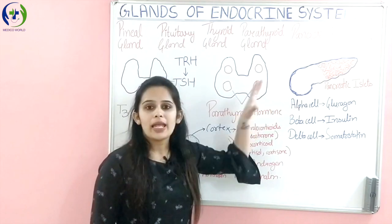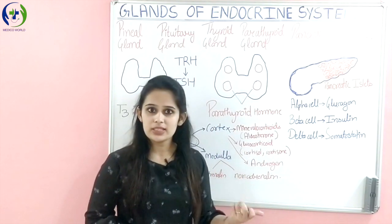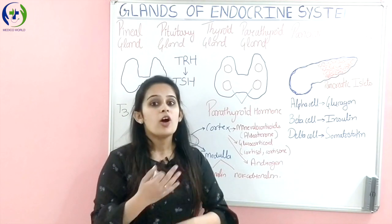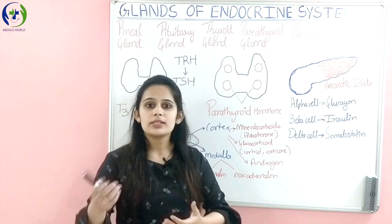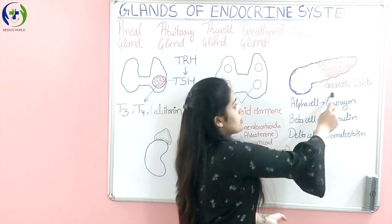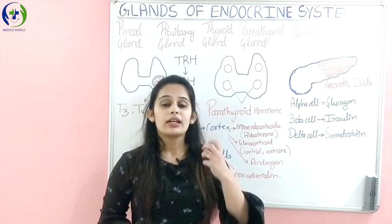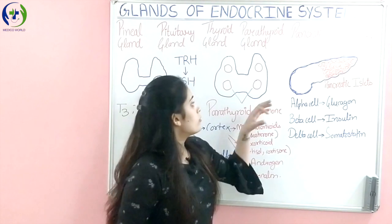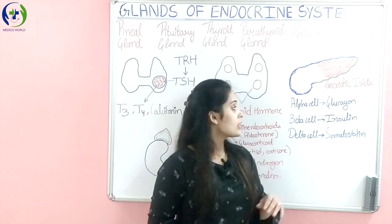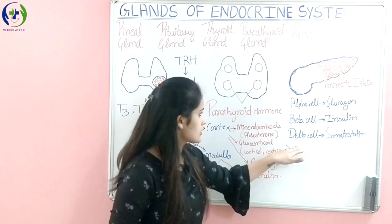Our next major gland is the pancreas. The pancreas is also a digestive system organ, but the pancreatic islets portion functions as the endocrine gland of the endocrine system. It regulates the blood sugar level. Three types of cells are present: alpha cells, beta cells, and delta cells.